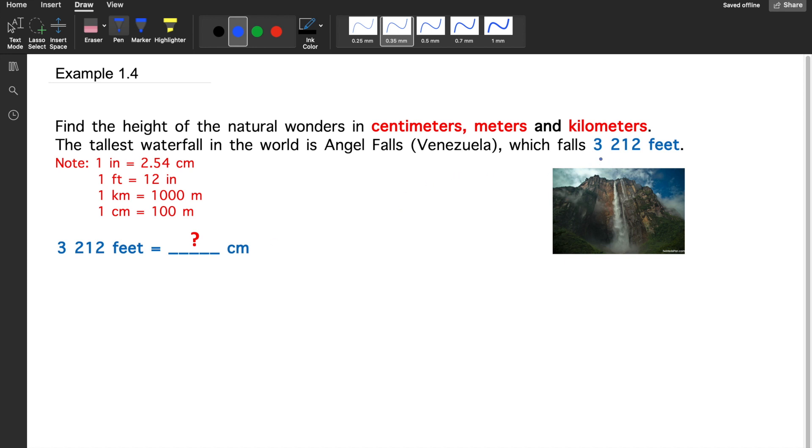Convert 3,212 feet to centimeters, meters, and kilometers. These are the important conversion factors, so please familiarize and memorize them. First, we'll write 3,212 feet equals 3,212 feet.